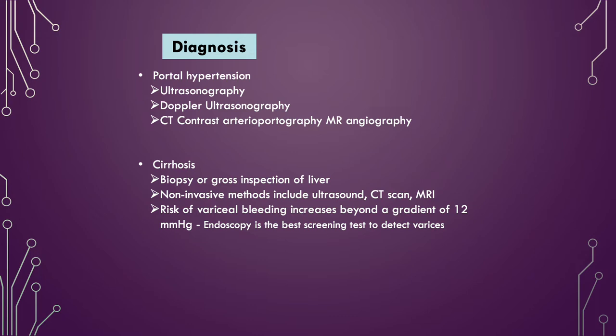Usually, doctors make the diagnosis of portal hypertension based on the presence of ascites or dilated veins or varices as seen during a physical exam of the abdomen or the anus. Various lab tests, x-ray tests, and endoscopic exams may also be used in addition to ultrasonography and Doppler ultrasonography that measure sound waves. MR angiography uses a powerful magnetic field, radio waves, and a computer to evaluate blood vessels and help identify abnormalities. This exam does not use radiation and may require an injection of contrast material. The contrast material used for MRA is less likely to cause an allergic reaction than the contrast material used for CT.